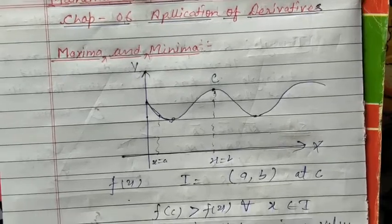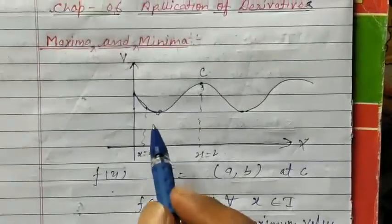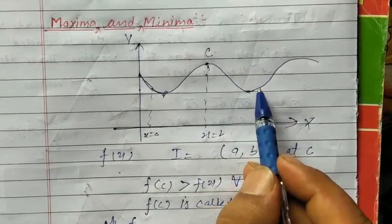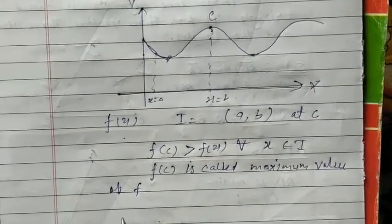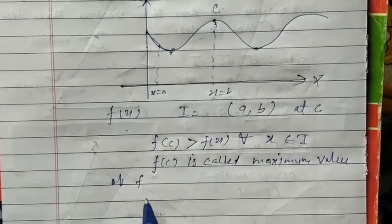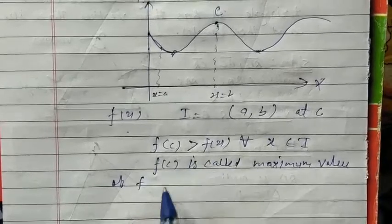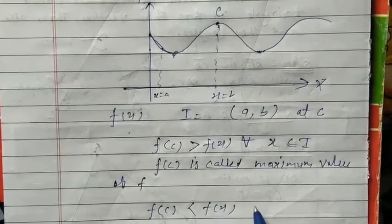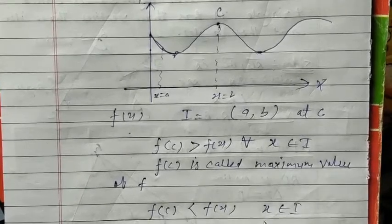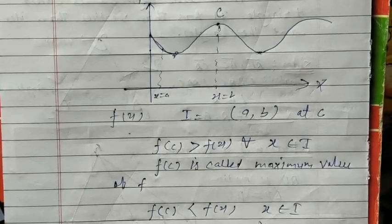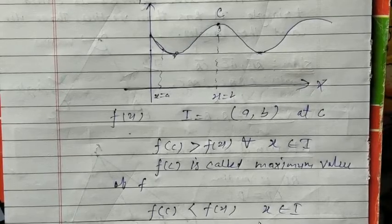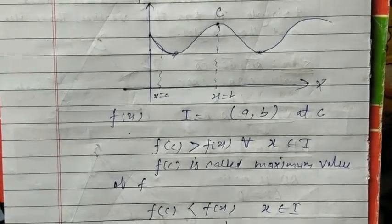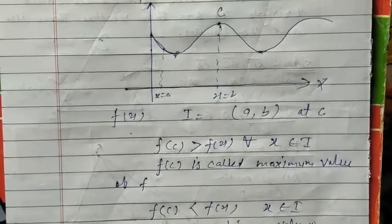Similarly, for minimum: at the minimum point, the function decreases and then starts to increase. Where it stops decreasing and starts increasing, you get the minimum point. Mathematically, f(c) is less than f(x) for every x belonging to I. The point c is called the minimum point, and f(c) is called the minimum value of the function.